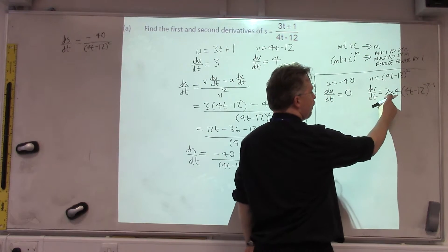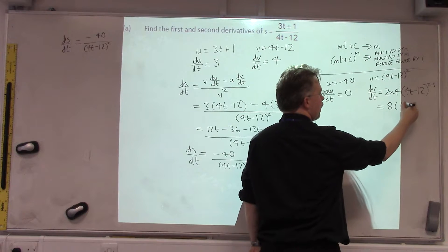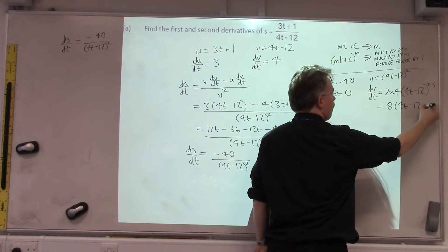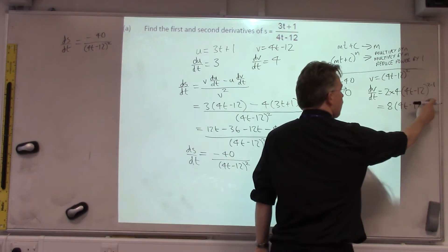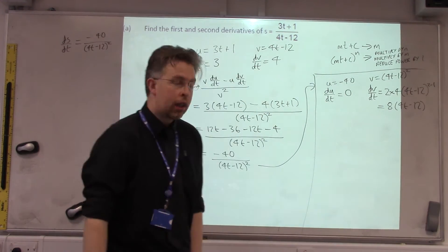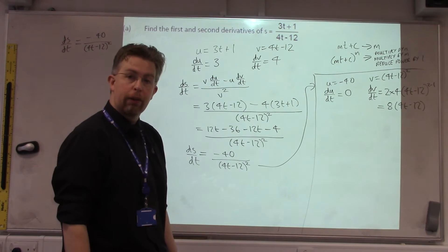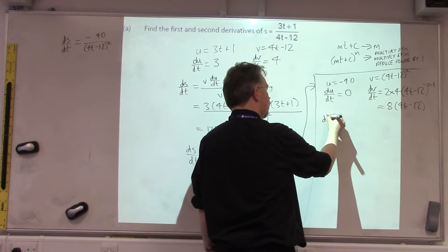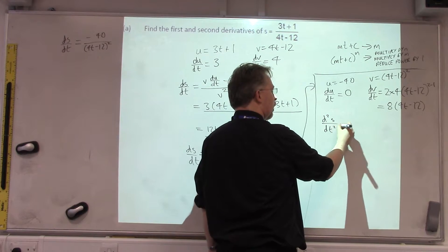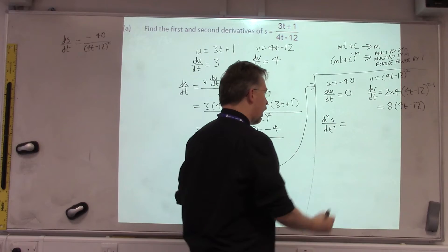Simplifying, well, the only simplification we do is 2 times 4 is 8. Well, actually, we do 2 take away 1 is 1, but that's a power of 1, and we don't usually write powers of 1, so we can leave that blank. So, D2S over DT squared, we're using the quotient rule again.